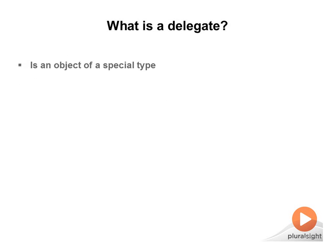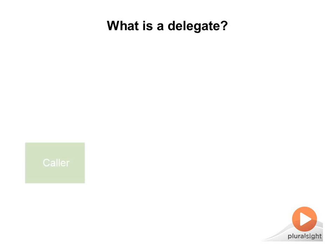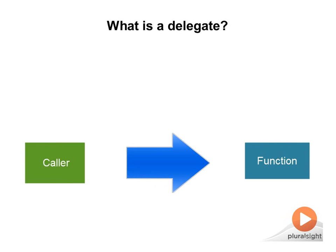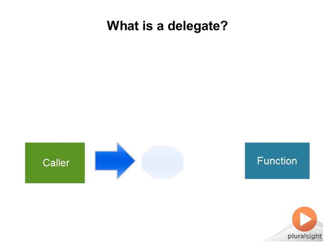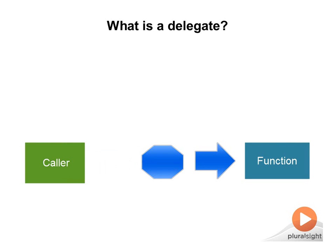A delegate is an object that represents a pointer to a function. Traditionally, to call a function, you need a caller and the function to be called. However, when using delegates, the caller invokes the delegate, which in turn calls the function it points to. Therefore, a delegate provides a proxy — a level of indirection — between the caller and its method.